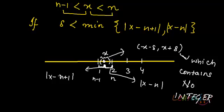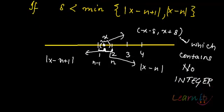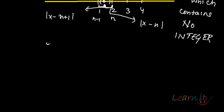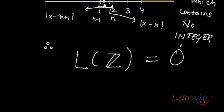This will happen because x is arbitrarily chosen. This will happen with each and every real number. Therefore, the set of cluster points for the set of integers Z is the null set. You do not have any cluster points for integers.